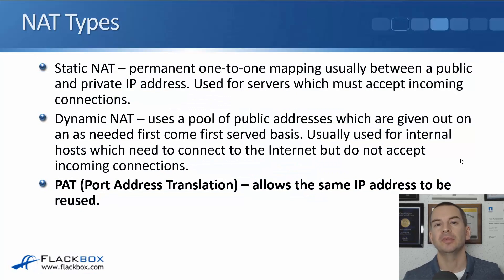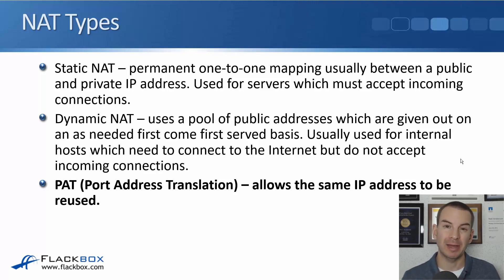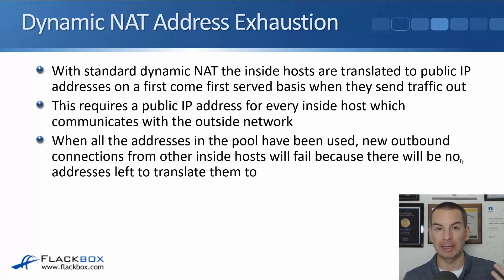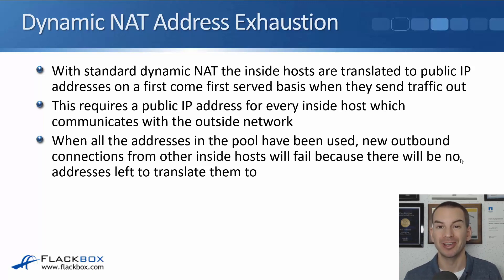In this lecture, you'll learn about the last of our NAT types, which is PAT — Port Address Translation. This allows the same IP address to be reused multiple times for translations. With standard dynamic NAT, the inside hosts are translated to public IP addresses on a first-come, first-served basis when we send traffic out. That requires a public IP address for every inside host which communicates with the outside network. When all the addresses in the pool have been used, new outbound connections from other inside hosts are going to fail because there are no addresses left to translate them to.